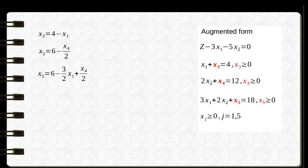On the left-hand side we have the basic variables, and on the right-hand side the non-basic variables. It gets easy to calculate the value of basic variables because the non-basic variable is 0. So we get x3 = 4, x4 = 0, x2 = 6, and x5 = 6. We also write the objective function in terms of non-basic variables so it is easy to find z. The value of z is 30.